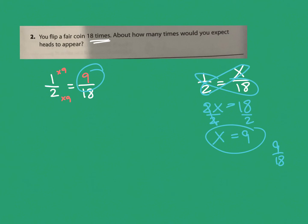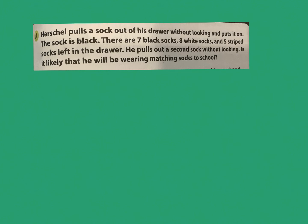Now let's talk about qualitative predictions — really just the likelihood of something happening. Herschel pulls a sock out of his drawer without looking and puts it on; the sock is black. In the drawer there are seven black socks, eight white socks, and five striped socks left. He pulls out a second sock without looking — is it likely he'll be wearing matching socks? Total possibilities: 7 + 8 + 5 = 20 socks.